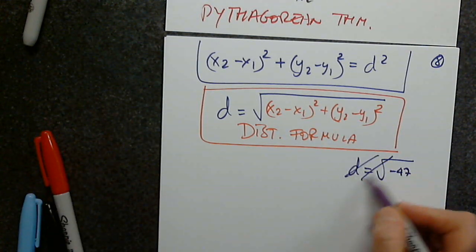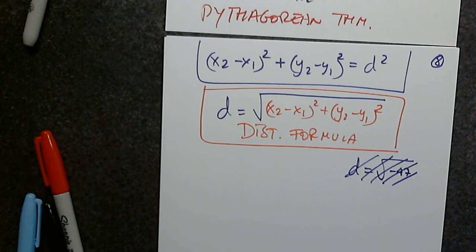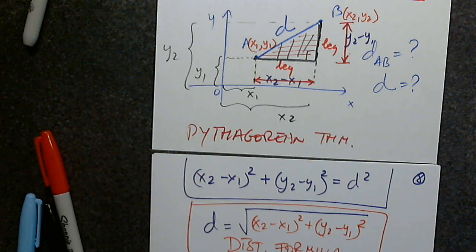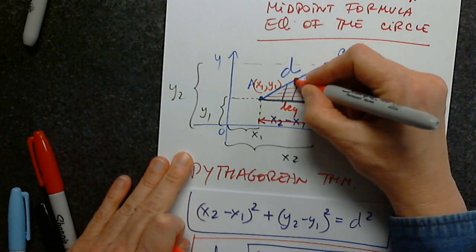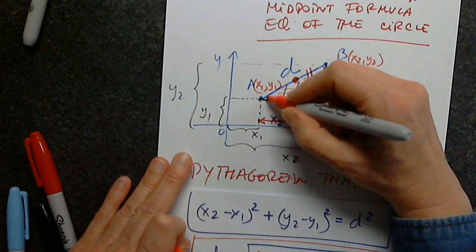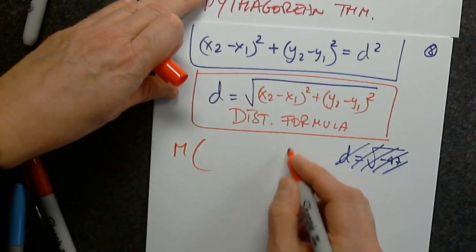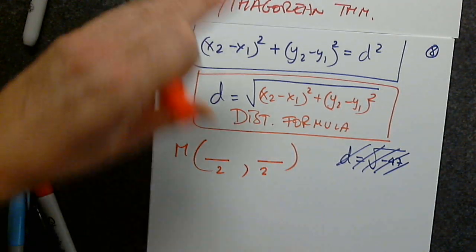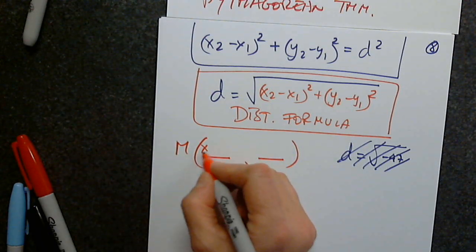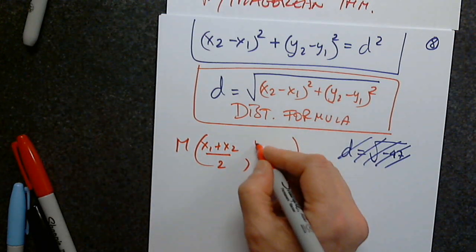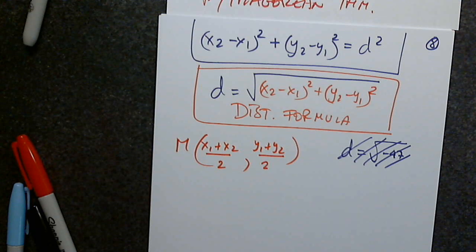No matter what numbers we plug in, the quantity under the square root will be non-negative because both terms are squared. The distance will never be the square root of a negative number. Now, the midpoint is the point on the line segment exactly in the middle, labeled M. Its coordinates are the average of the coordinates: x₁ + x₂ over 2, and y₁ + y₂ over 2.